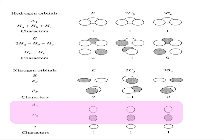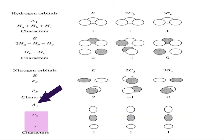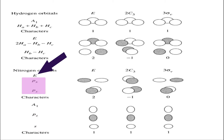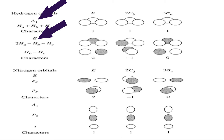For pz, considering the upper lobe positive and lower lobe negative: after identity, C3, and the vertical plane, there is no change in the wave function, so the representation is again (1, 1, 1) — also A1. Therefore, on nitrogen's team, the two players with A1 symmetry are the 2s and 2pz orbitals. The 2px and 2py orbitals together form the E representation, acting as a two-dimensional pair.